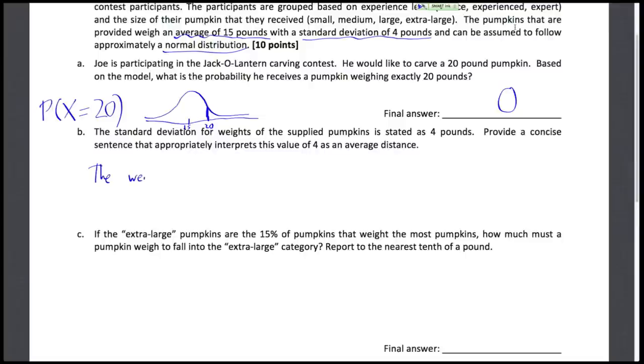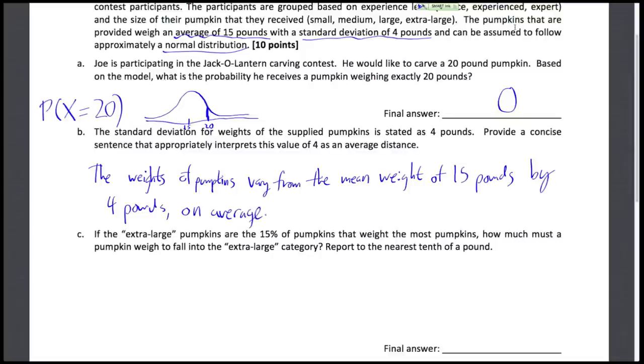So the weights of pumpkins vary from the mean by 15 pounds, by 15 pounds, the mean weight of 15 pounds, by 4 pounds on average. Okay. So this sentence is a good sentence here. And let me show the important parts here.